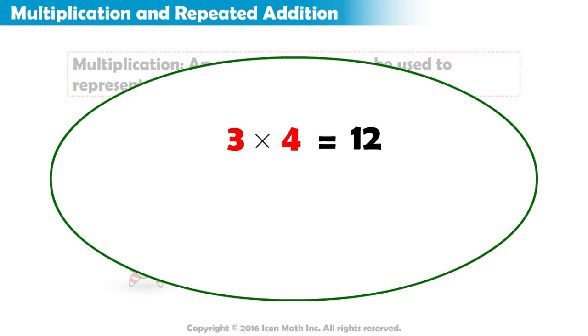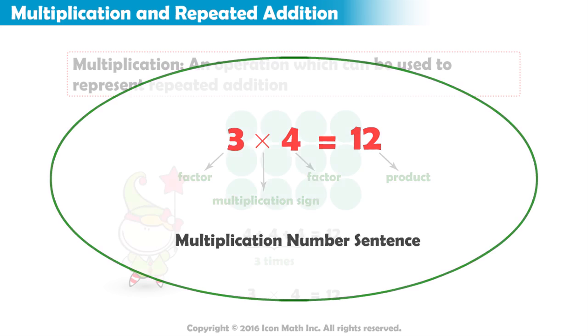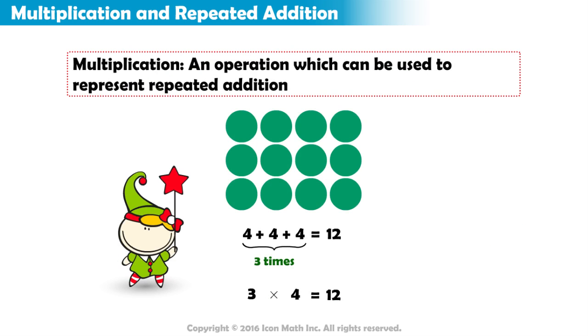Three and four are called Factors, and this is the multiplication sign, and twelve is called the product. All together represent a multiplication number sentence. Notice that this sentence replaced the number sentence four plus four plus four.